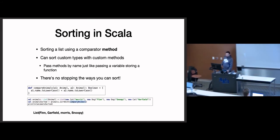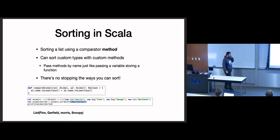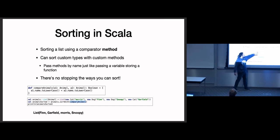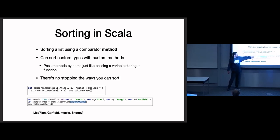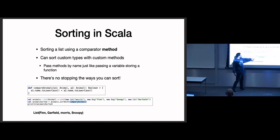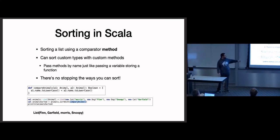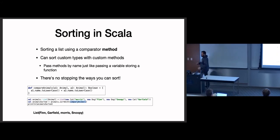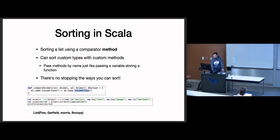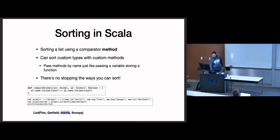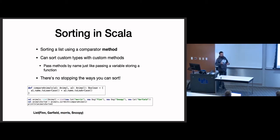We can even pass methods. If I have a method — say, in an Animal class — def compareAnimals takes two animals and returns a boolean. As long as you're sorting a list of animals and you give it a comparator that can compare two elements of that type, you can use sortWith. The method will be converted to a function when you call sortWith. Here I want to sort my animals by name and ignore case, so I convert both to lowercase and use the less-than comparator on ASCII values. This gives me a sorting where Morris would be the first element; without this, animals.sorted would take capitalization into account.